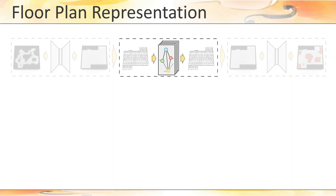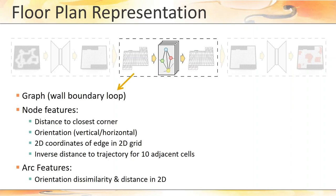The input to the second network, remember, a graph with a node for each discrete edge on the boundary loop, contains as per node features the distance to the closest corner on the loop, the orientation of the edge, that is a flag denoting whether it's vertical or horizontal, the 2D coordinates of the edge within the original discretized 2D grid, and the inverse distance to the walk trajectory for the adjacent block of 10 grid cells in the interior footprint.